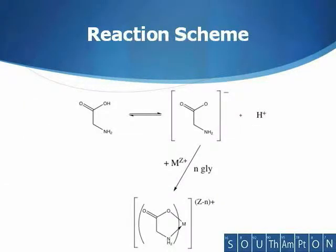Glycine can dissociate by the loss of a proton to form a glycinate monoanion. This can bind to a transition metal by coordinating through a carboxylate oxygen atom and/or an amino nitrogen atom.